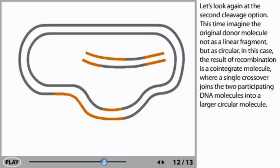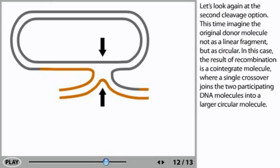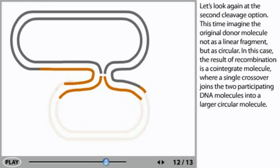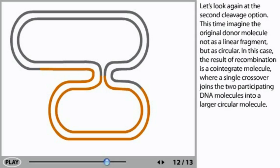Let's look again at the second cleavage option. This time, imagine the original donor molecule not as a linear fragment but as circular. In this case, the result of recombination is a co-integrate molecule where a single crossover joins the two participating DNA molecules into a larger circular molecule.